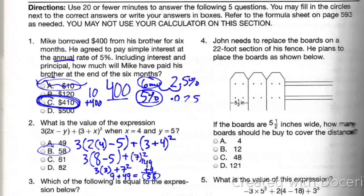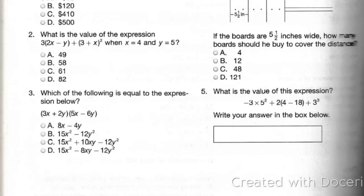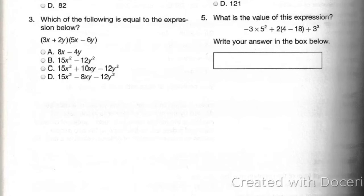I'm moving on to the next one. Number 3 says, which of the following is equal to the expression below? We have (3x + 2y)(5x - 6y). So I'm going to rewrite this. You do not have to rewrite if you don't want to, but rewriting is crucial for me to get this correct.